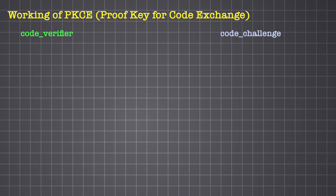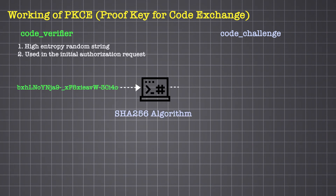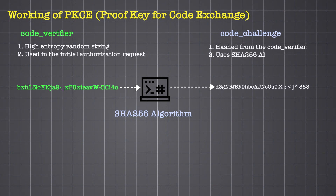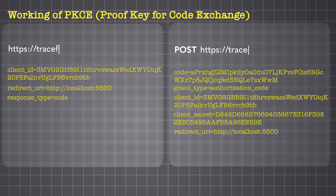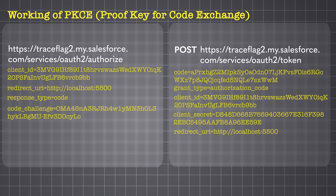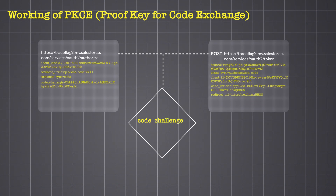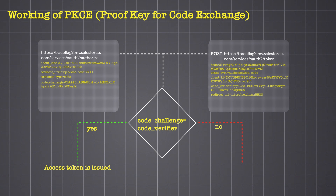When the client app begins the auth process, it first generates a high-entropy random string called the code verifier. This value is then hashed using the SHA-256 algorithm and Base64 URL-encoded to produce a corresponding code challenge. We include this code challenge along with the other necessary parameters in the initial authorization request to Salesforce. Salesforce stores this challenge securely on its end and grants the authorization code. In the POST request, we remove the client secret and include the original code verifier instead. Salesforce then regenerates the hash from the code verifier and compares it to the previously stored code challenge. If they match, the request is valid and Salesforce issues an access token; if they don't, the request fails with an invalid request error.